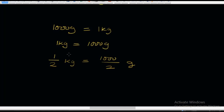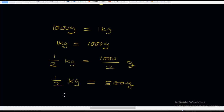1/2 kg means half of a kilogram. Let's work this out: half a kilogram, that is 1/2 kg, is equal to 1,000 divided by 2, which is 500 grams. So half a kilogram is equal to 500 grams.